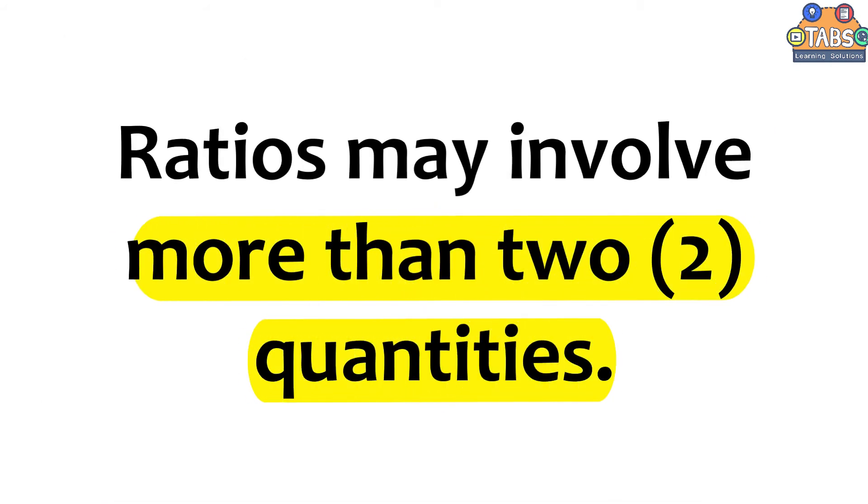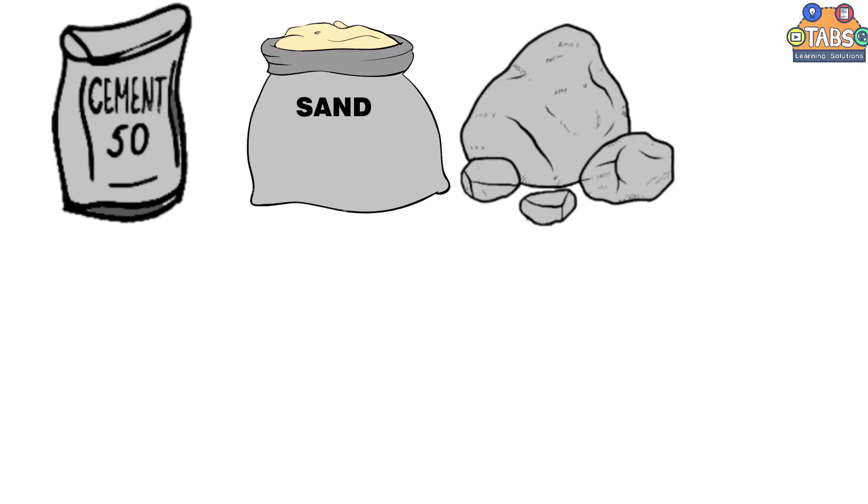Although most ratios involve two quantities, they may involve more than two quantities. For example, concrete is made of mixing cement, sand, and stone, and water. A typical mix of cement, sand, and stone is written at a ratio such as 1 is to 2 is to 6.